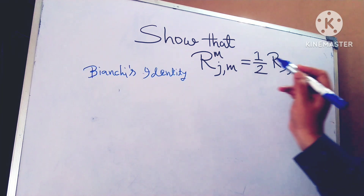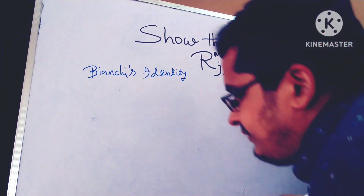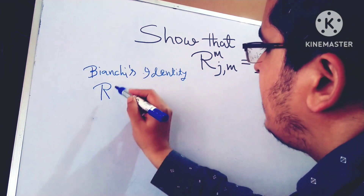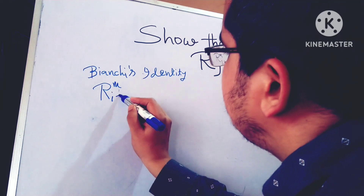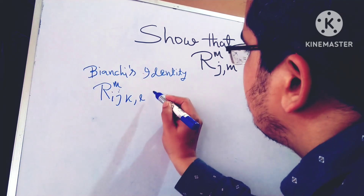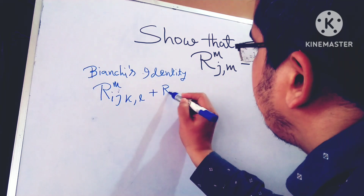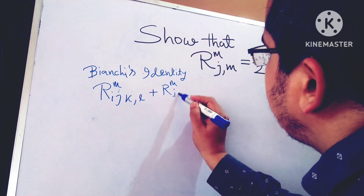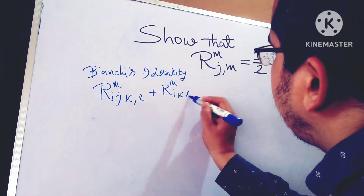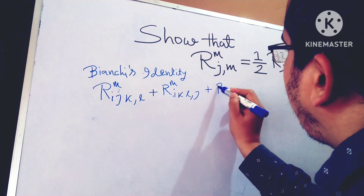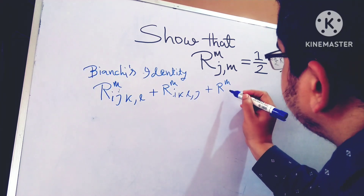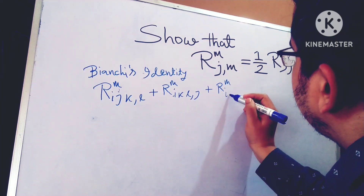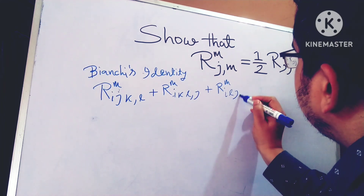You need to know Bianchi's identity. So Bianchi's identity is: R_MIJKL plus R_MILJK plus R_MIKJL equals to 0.